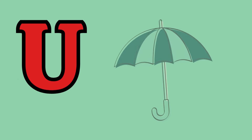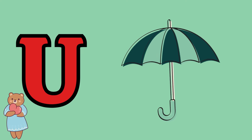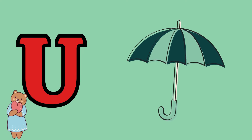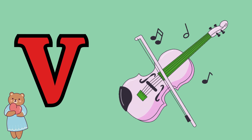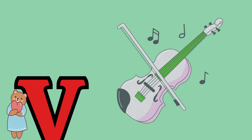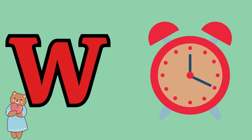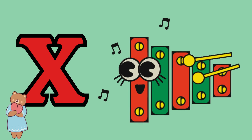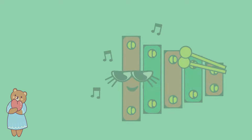U is for umbrella, u-u-umbrella. V is for violin, v-v-violin. W is for watch, w-w-watch. X is for xylophone, x-x-xylophone.